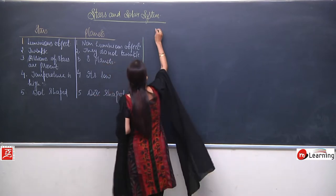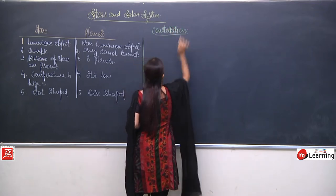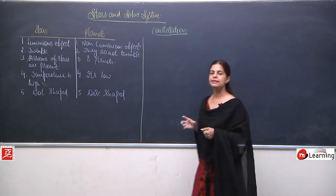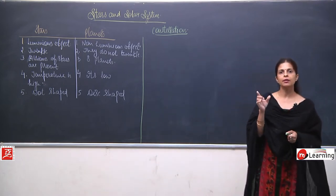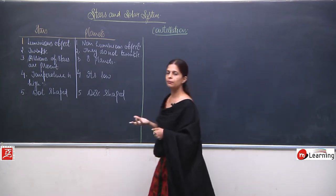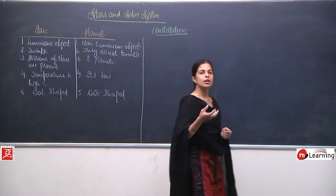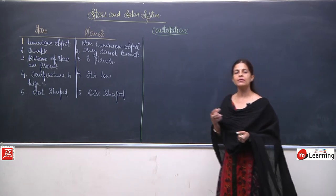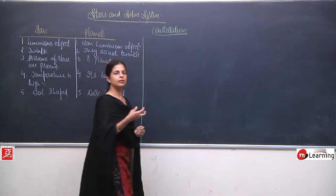Now we will talk about a new topic, and that is constellation. What is the meaning of constellation? Constellation means the group of stars which are always found together. If we try to match their boundaries with imaginary lines, they come up with some figure or shape — maybe the shape of some letter, some human being, or some animal. Take the example of the great bear, or different shapes like Orion.